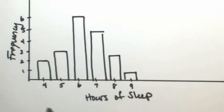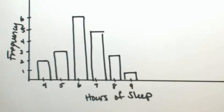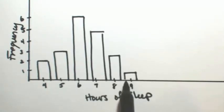If one of these numbers of sleep had a frequency of 0, meaning no student had that amount, at that number you would just have no bar — it would just be empty.